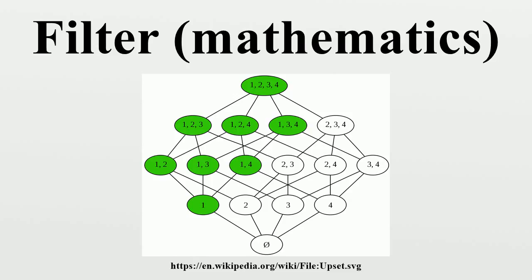If N is a neighborhood base at x and C is a filter base on X, then C → x if and only if C is finer than N. If Y ⊆ X, a point p ∈ X is called the limit point of Y in X if and only if each neighborhood U of p intersects Y. This happens if and only if there is a filter base of subsets of Y that converges to p in X. For Y ⊆ X, the following are equivalent: there exists a filter base F whose elements are all contained in Y such that F → x; there exists a filter F such that Y is an element of F and F → x; the point x lies in the closure of Y.